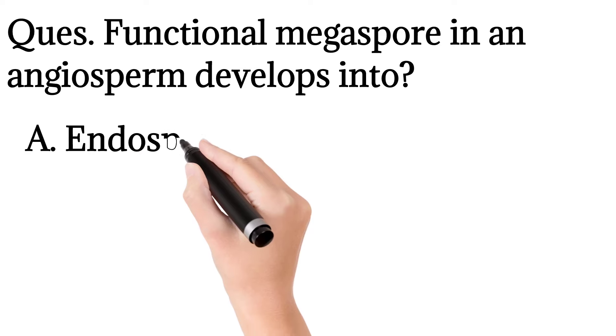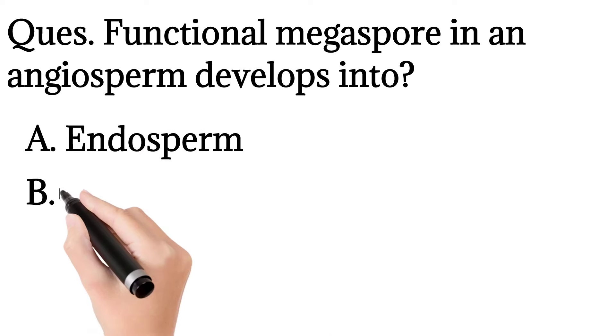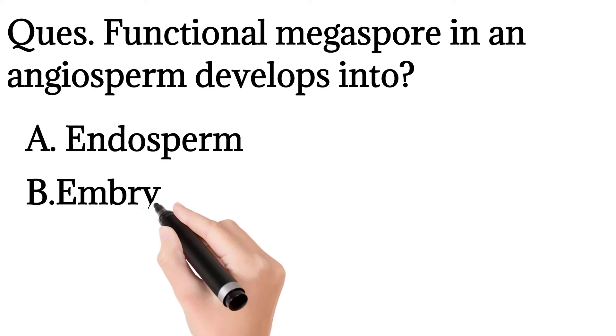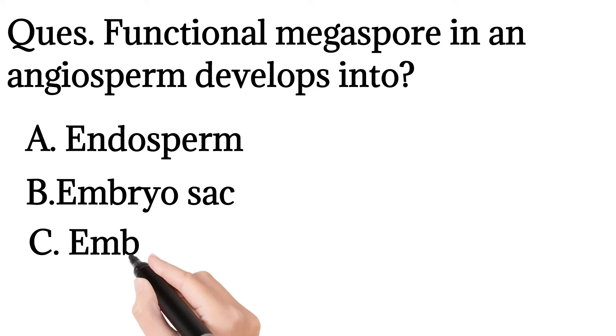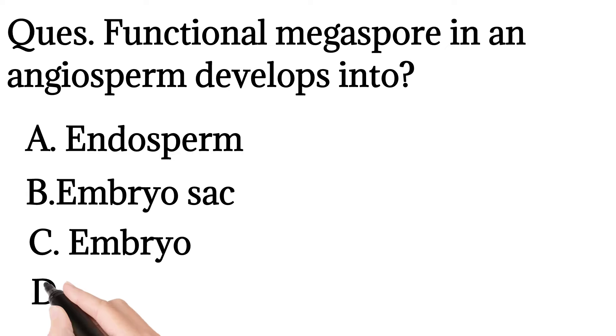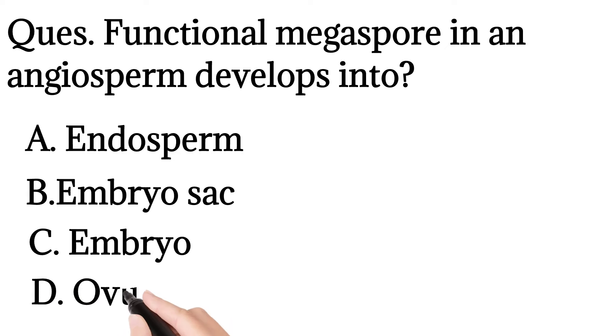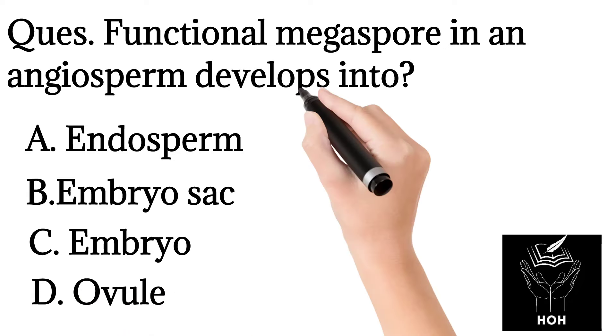10. The functional megaspore in an angiosperm develops into: endosperm, embryo sac, embryo, or ovule.